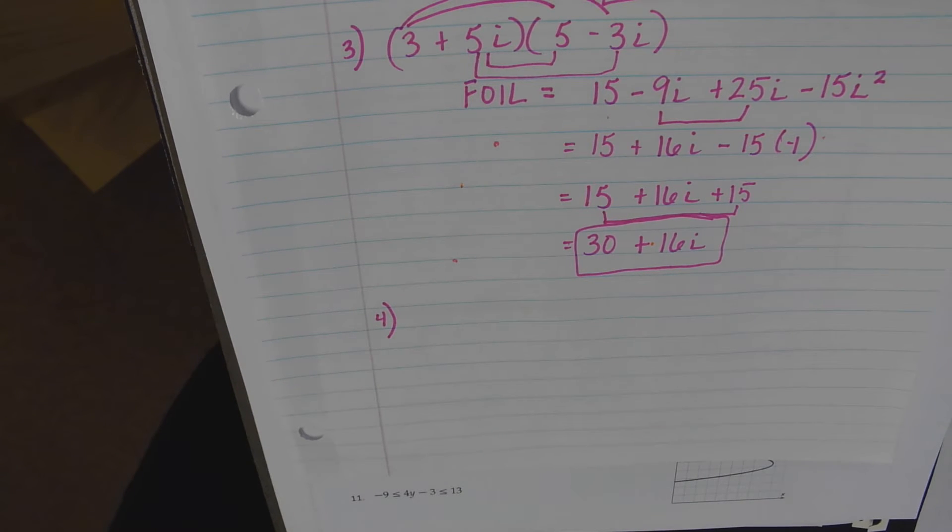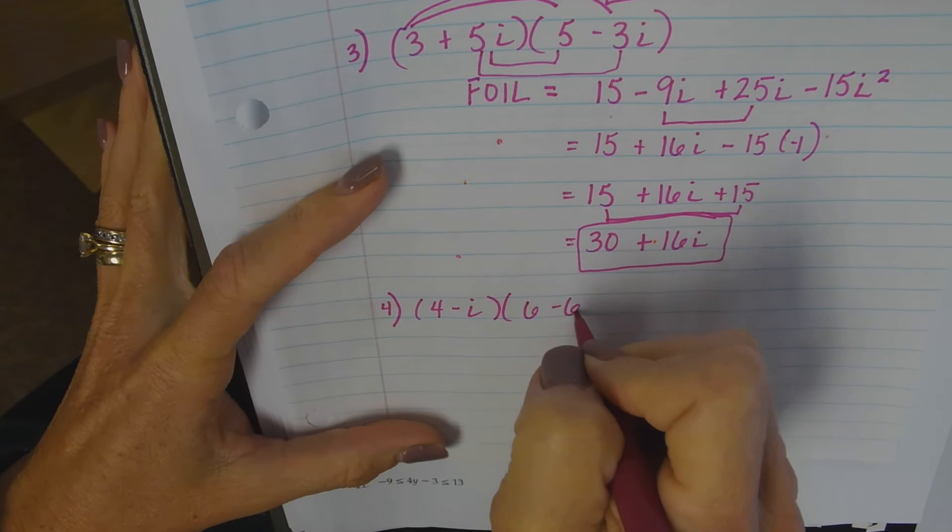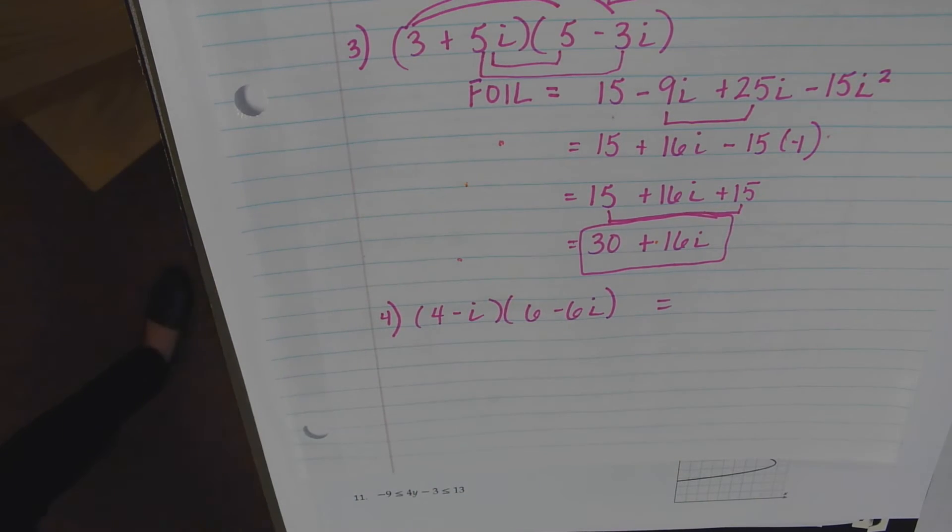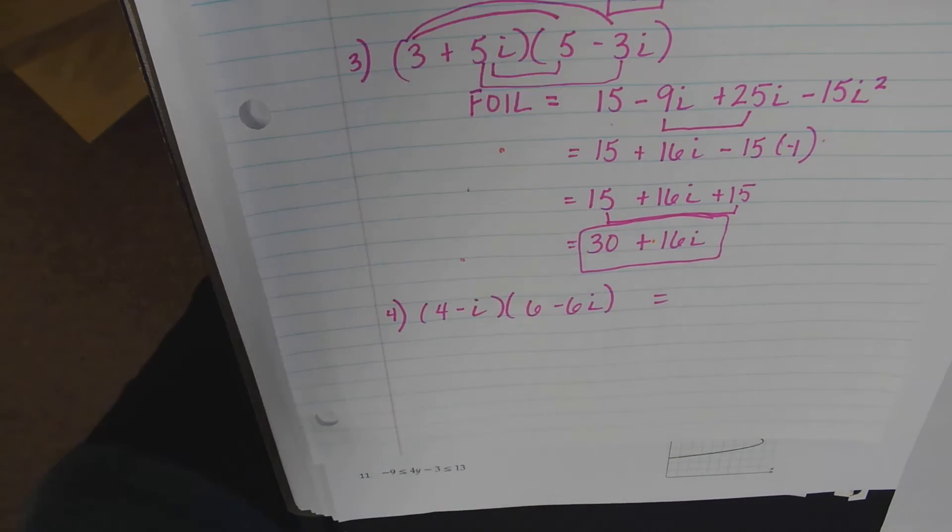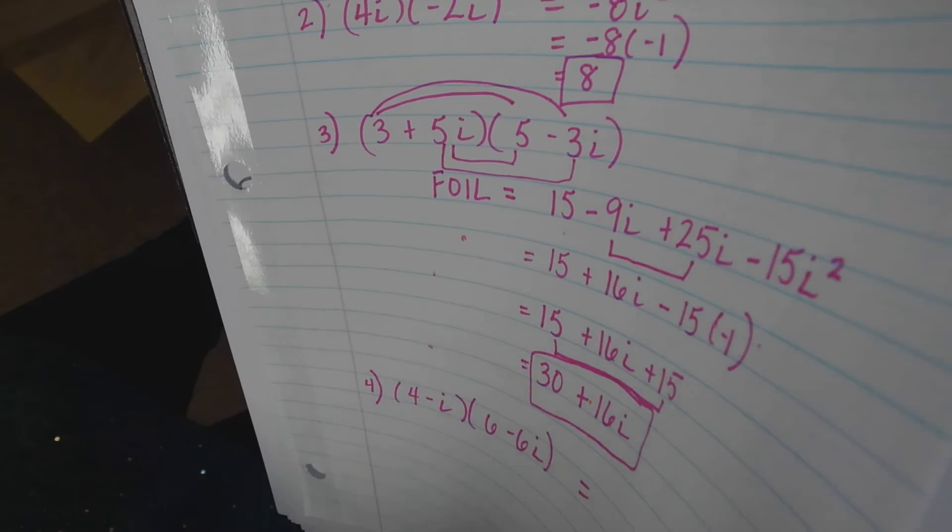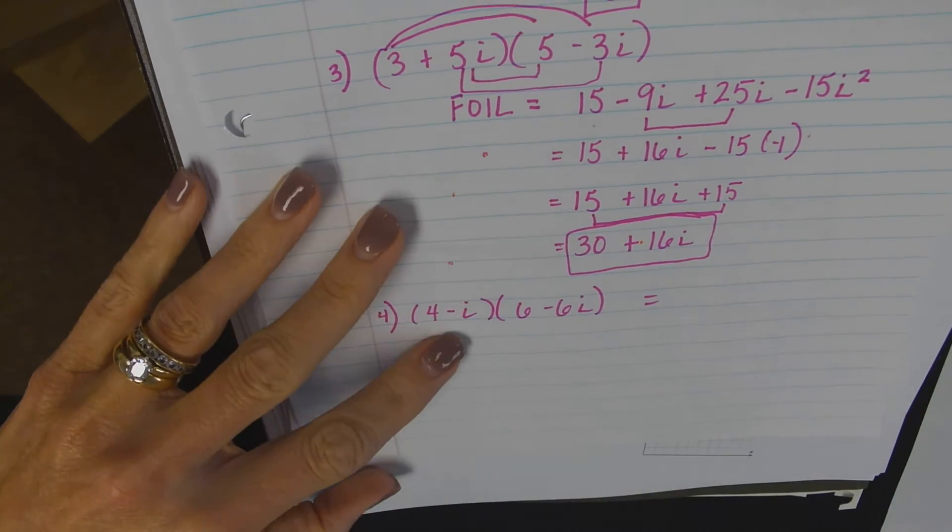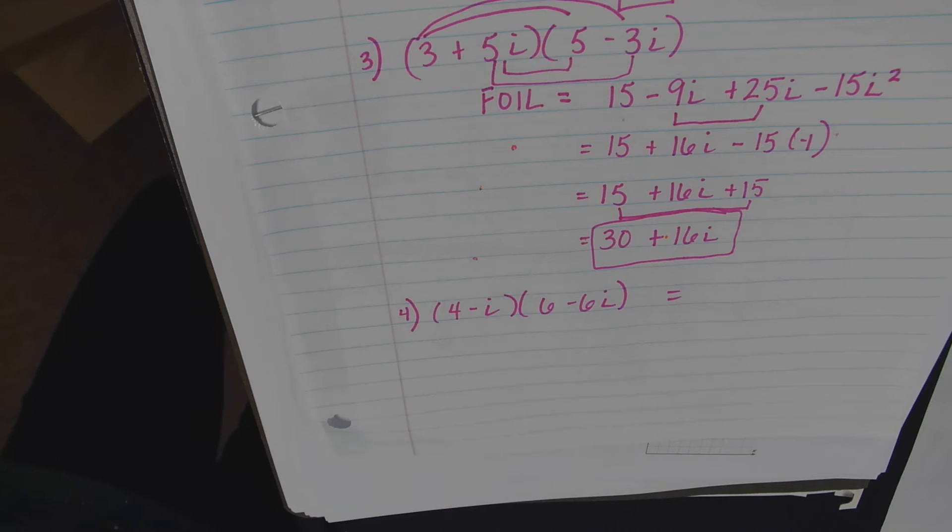We'll do one more. 4 minus i times 6 minus 6i. Try that.